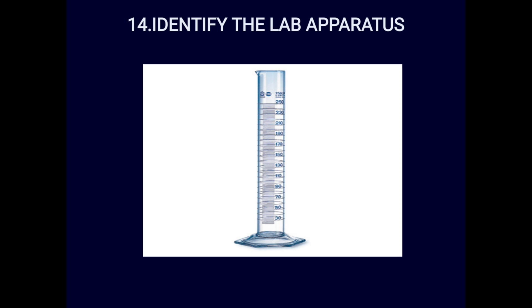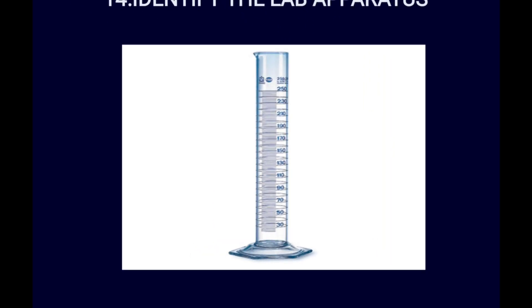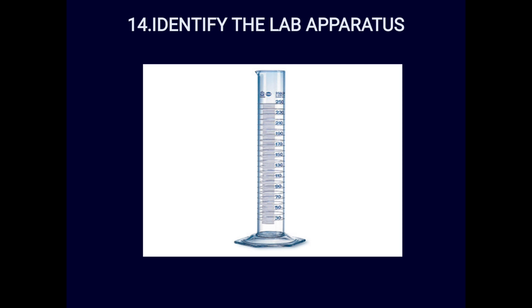Spotter fourteen: identify the lab apparatus. This is a measuring cylinder — available in 100 ml, 500 ml, 1 liter, 5 liter sizes — used for preparation of reagents. It has markings but is not as accurate as a standard flask or glass pipette. The answer is measuring cylinder.